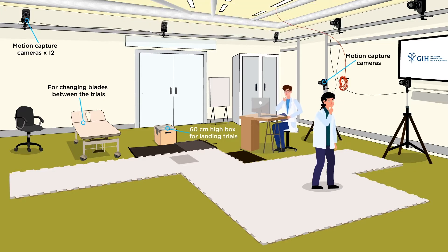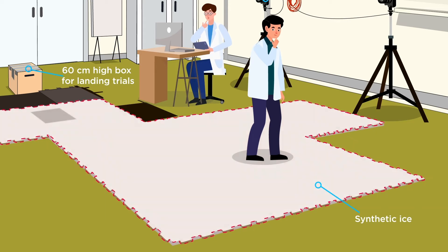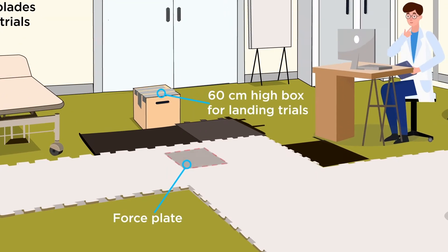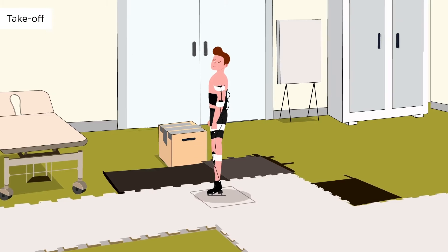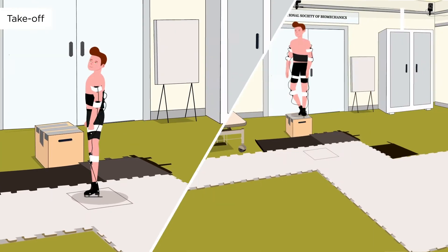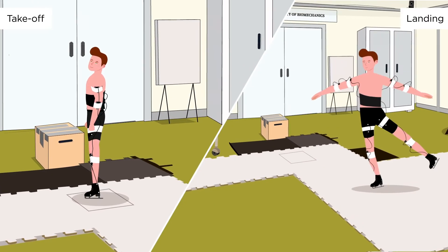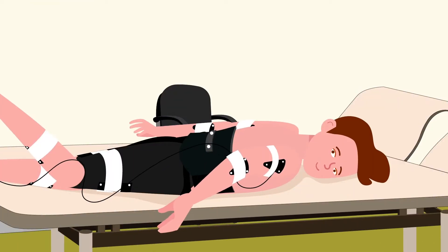To simulate on-ice conditions, synthetic ice was used, and a force plate was installed. Different blades were mounted on identical boots, and 17 male figure skaters executed takeoff and landings.